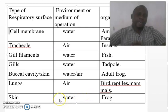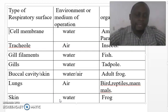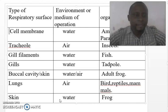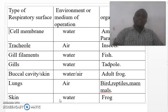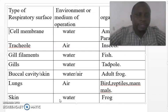So what have you learned today? Probably you have learned about different types of respiratory surfaces. You might also say that gaseous exchange is important in animals because it allows animals to extract oxygen, which is important for respiration.